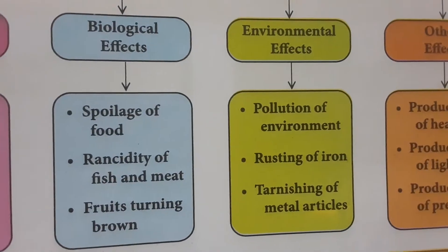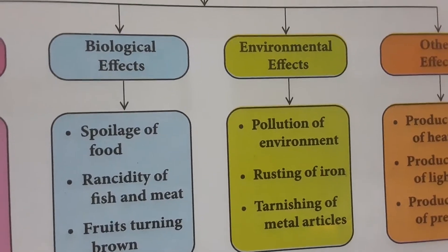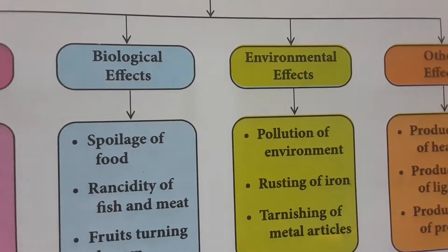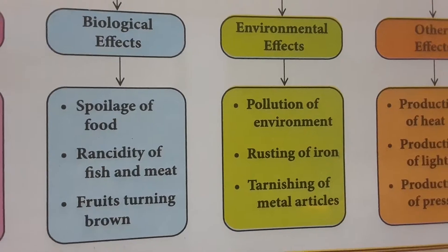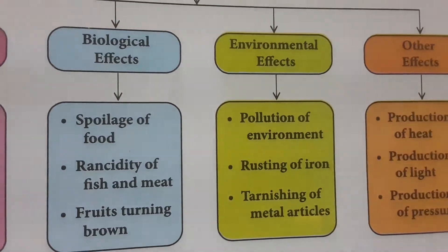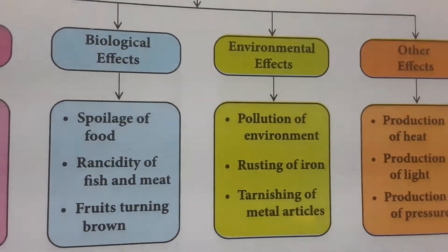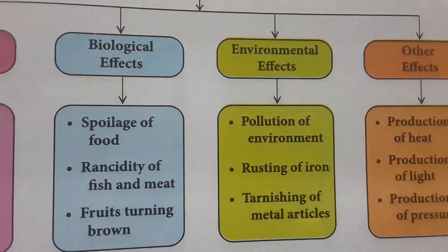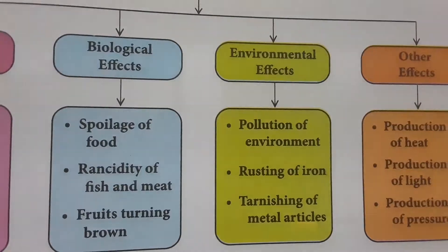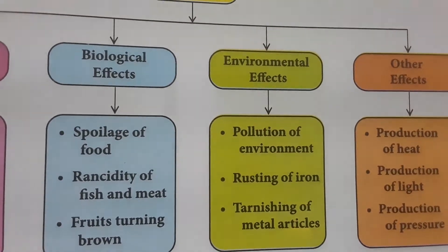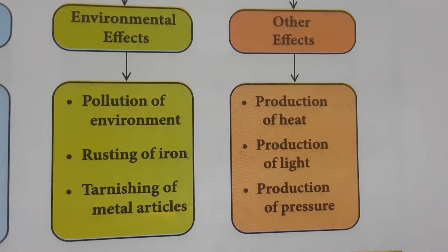Biological effects include spoilage of food — foods get spoiled and become unfit for eating — and rancidity of fish and meat, caused by bacteria or viruses that decompose them. Fruits turning brown is also a biological effect; when you cut vegetables like banana, apple, or amla, the cut area changes to a light brown color.